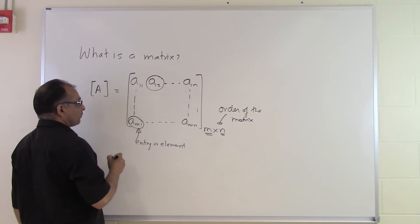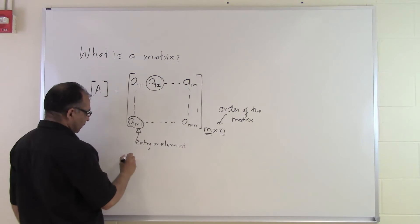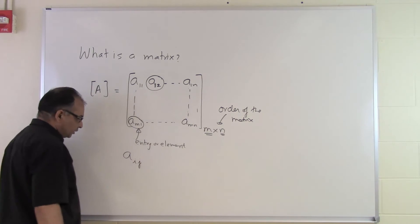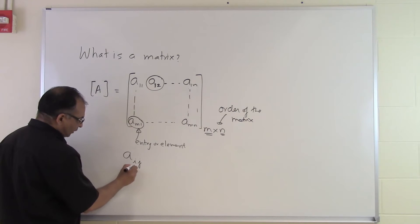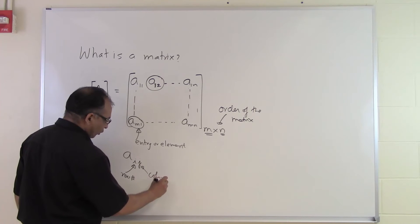So you have A12 here for example, that means it's in the first row and the second column. Each entry will have two subscripts, i and j, where i corresponds to the row number and j corresponds to the column number.